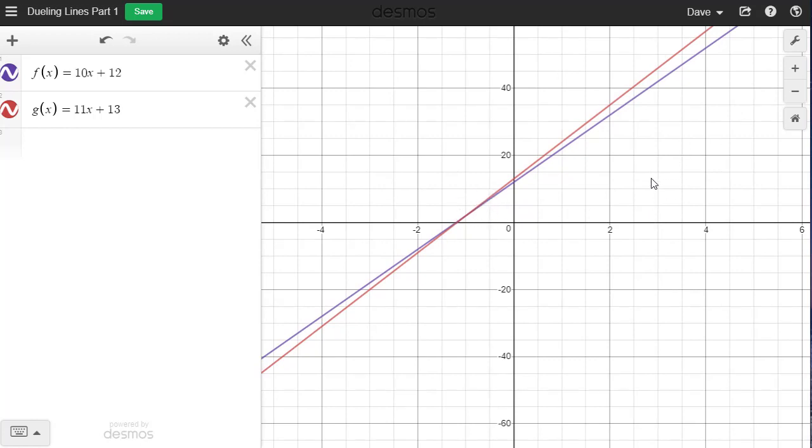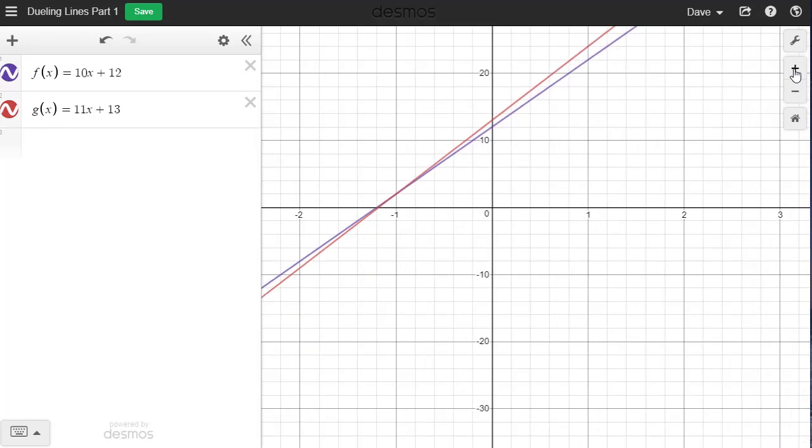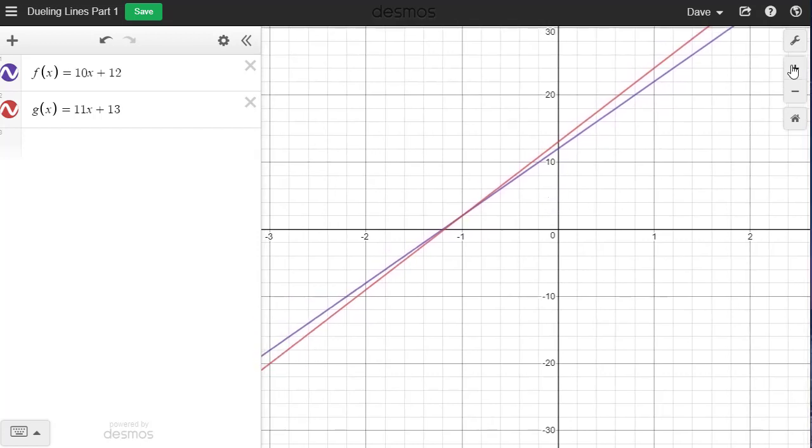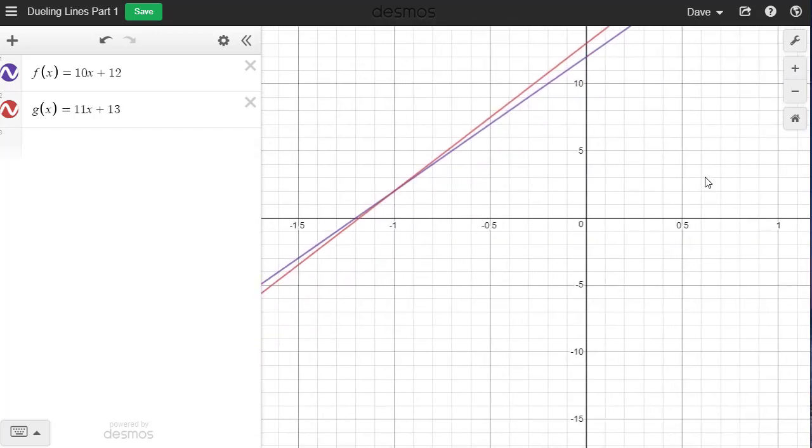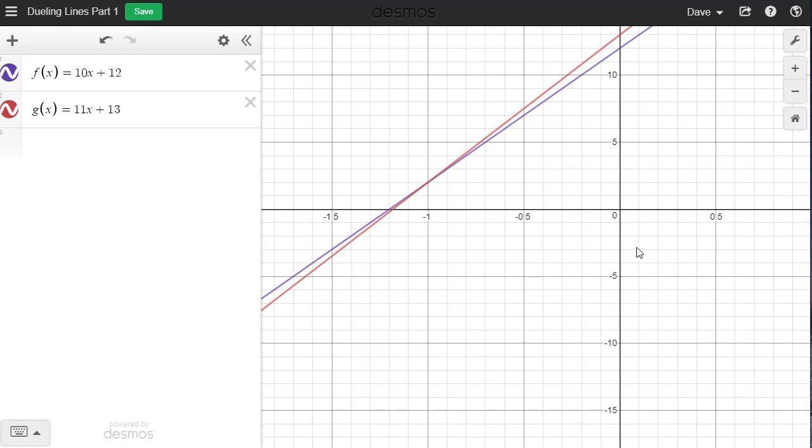So the point of intersection looks to be about here at negative one something like that. Let me go ahead and zoom in on that point. One of the nice things is I showed you how to change the graph window before but if you go up to where it says plus and minus up here you can zoom in and zoom out. So let me zoom in a little bit. I'm going to click on the plus. I'm going to move the graph over a little bit. Go in one more time and I think that's pretty good.